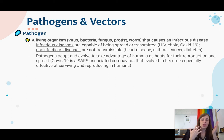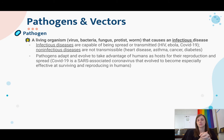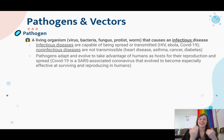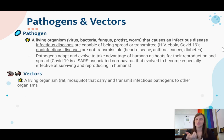For example, COVID-19 is a SARS-associated coronavirus that mutated and evolved to become really good at surviving and reproducing in humans and being spread. So COVID-19 is proof that we have evolving pathogens, which can make them hard to fight.